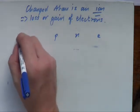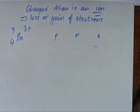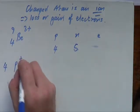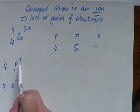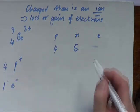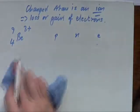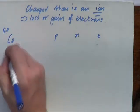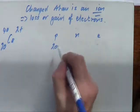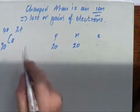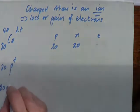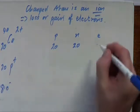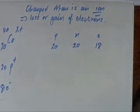Let's look at beryllium as a 3+ ion. Protons are four, neutrons are 9 minus 4 which is five. It would have started with four protons and four electrons. It now has a 3+ charge — three more positives than negatives — so it must only have one electron. For calcium as a 2+ ion: protons are 20, neutrons are 40 minus 20 which is 20. It started with 20 electrons but has a 2+ charge, so it must only have 18 electrons — it has lost two electrons during a chemical reaction.